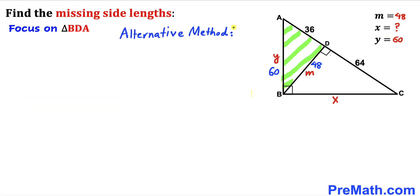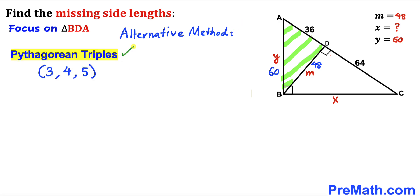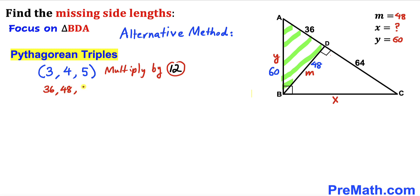As an alternative to the Pythagorean theorem, recall the Pythagorean triplet 3, 4, 5. Multiplying each by 12: 3×12 = 36, 4×12 = 48, 5×12 = 60. So the Pythagorean triplet is 36, 48, and 60, confirming that AB = 60.